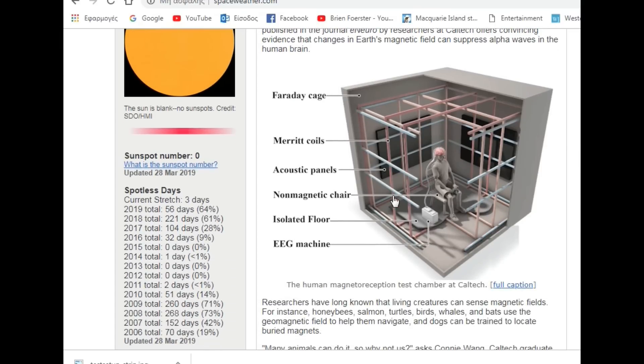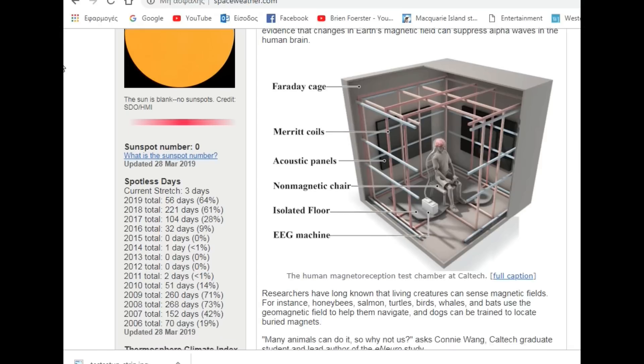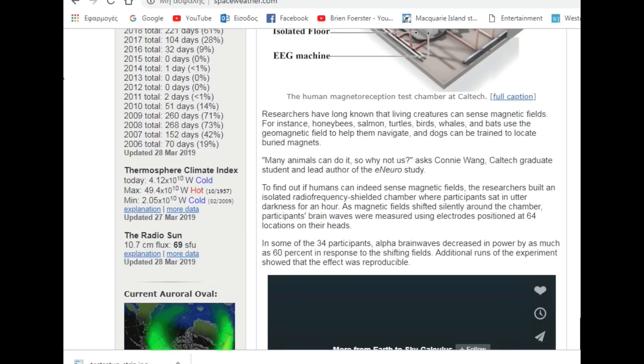Now, this is a Faraday cage. It's a special container that keeps out the effects of solar radiation. For example, you can put in your electrical appliances in there and they'll be kept safe. It says this is a Faraday cage. Merritt coils, acoustic panels, non-magnetic chair, isolated floor, EEG machine. They've got them hooked up to an EEG machine to see what happens. Researchers have long known that living creatures can sense magnetic fields. For instance, honeybees, salmons, turtles, birds, whales, and bats use the geomagnetic field to help them navigate. And dogs can be trained to locate buried magnets. And now, quote, many animals can do it. So why not us? End quote. Asks Connie Wang, Caltech graduate student and lead author of the e-neuro study.